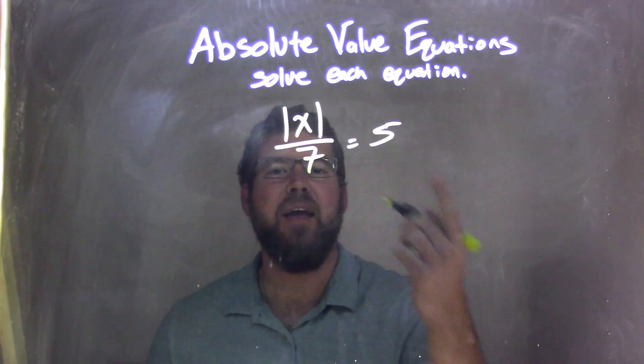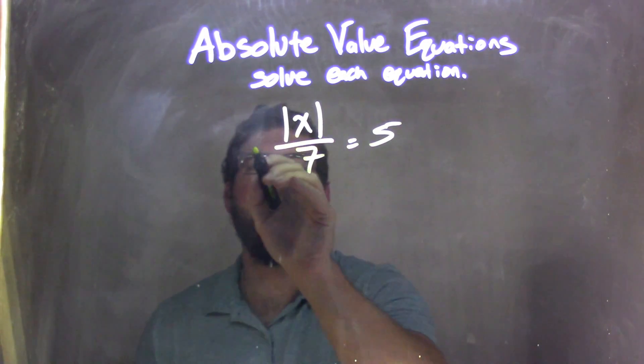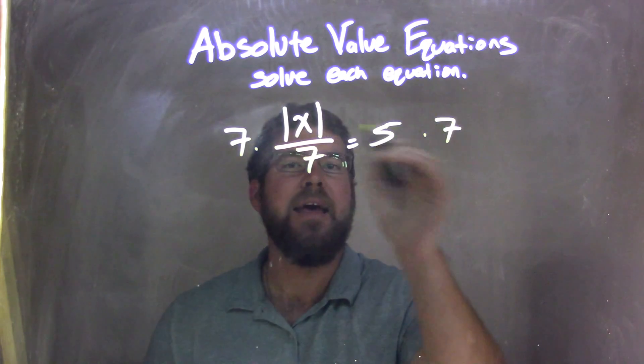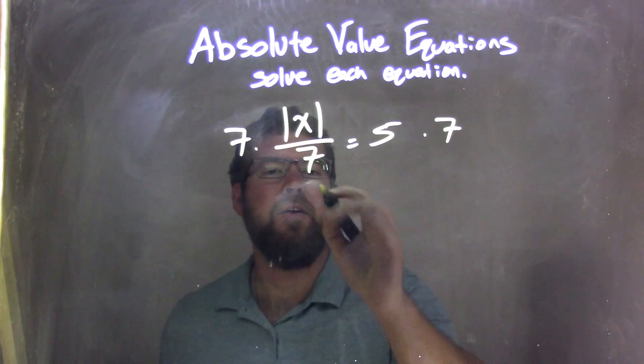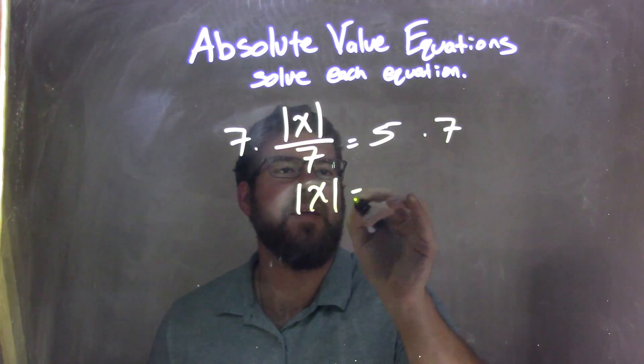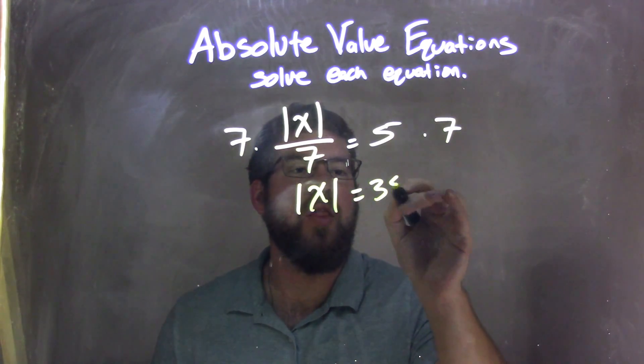First step, get the absolute value by itself, so I'm going to multiply 7 to both sides. Leaving me here with the absolute value of x. Absolute value of x equals 5 times 7, 35.